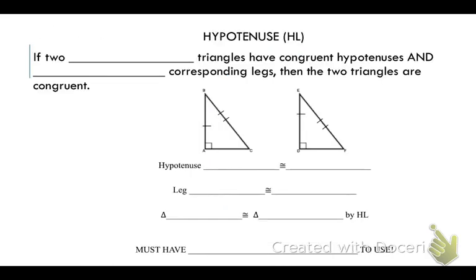Now that we have this terminology down, the hypotenuse leg theorem says: if two right triangles have congruent hypotenuses and one pair of corresponding congruent legs, then the two triangles are congruent.